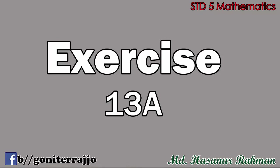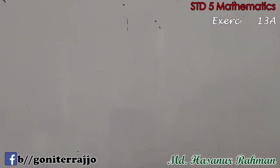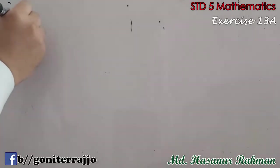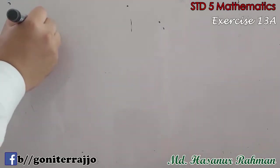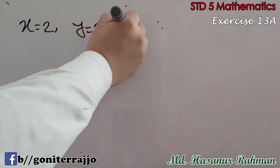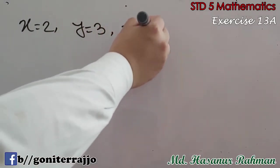Assalamu alaikum dear students. Today we will solve exercise 13a, number 1. The question says: if x equals 2, y equals 3, and z equals 4, find the values of the following expressions. So three numbers are given: x equal to 2, y equal to 3, and z equal to 4.